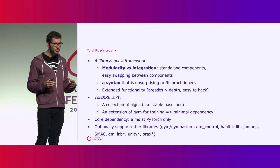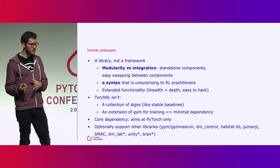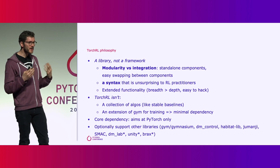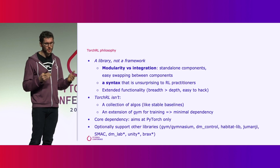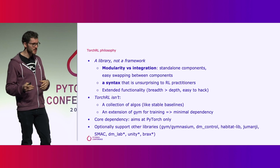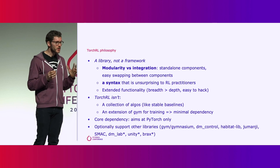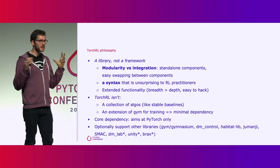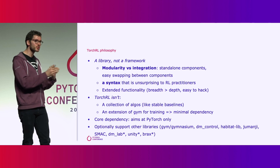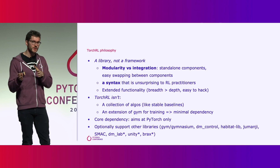We tried to have a core dependency on PyTorch and PyTorch only, while supporting many other libraries such as Gym, DM Control, Habitat, Jumanji, Brax, and others. We really tried to integrate all of these into a unified API so that users can easily swap from one simulator to another.